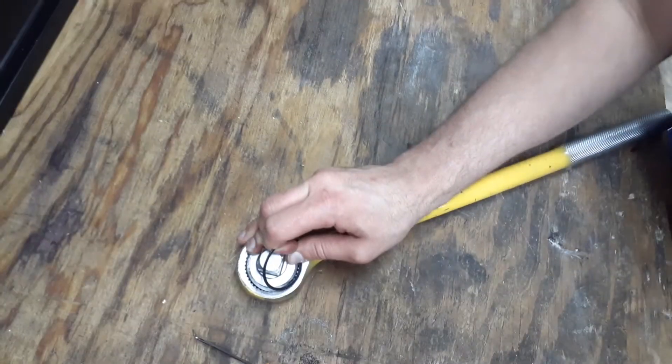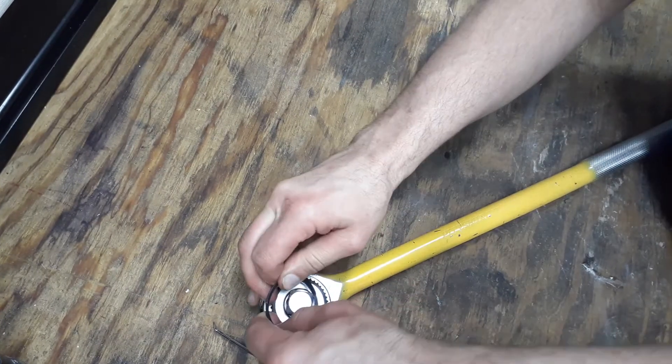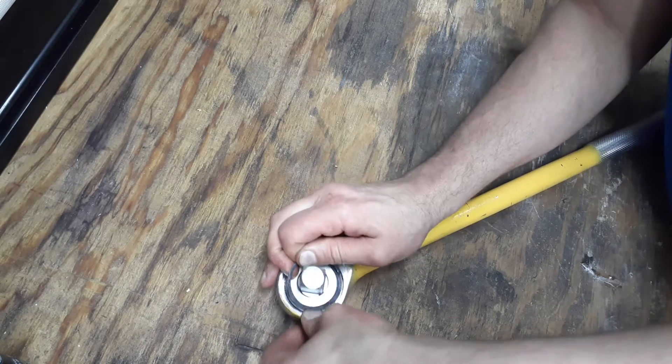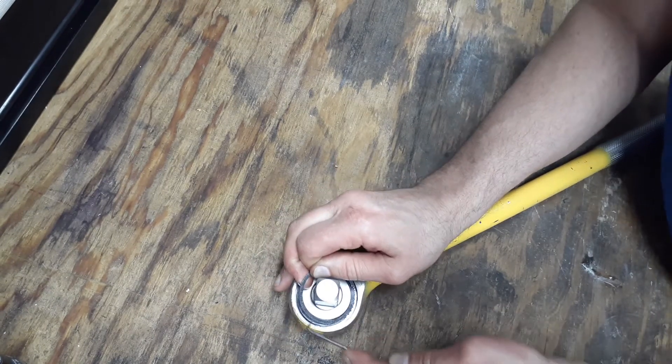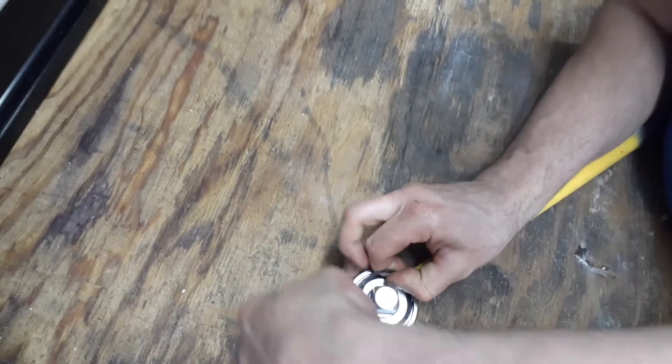Yeah, once you get it going it goes real easy. But like I said, this thing is coated in oil because I packed it full of grease a while back. Now I'm getting the grease all over my hands. That's probably why some of the YouTubers wear gloves when they're working on these ratchets.